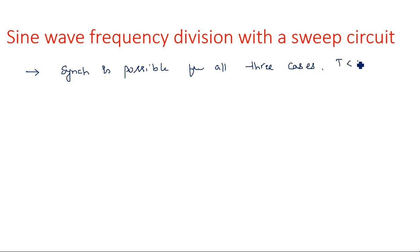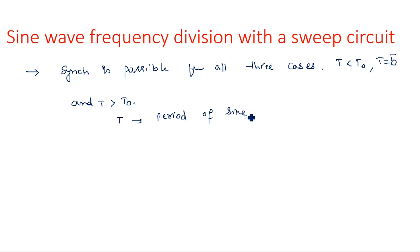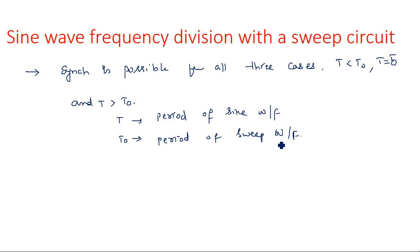The three cases are: t less than t-naught, t equal to t-naught, and t greater than t-naught. Here, t is the period of the sine waveform and t-naught is the period of the sweep circuit waveform. In exams, if asked about sine wave frequency synchronization or symmetrical signal synchronization, you must consider the circuit diagram of the UJT relaxation oscillator, and explain the entire concept with respect to that circuit.